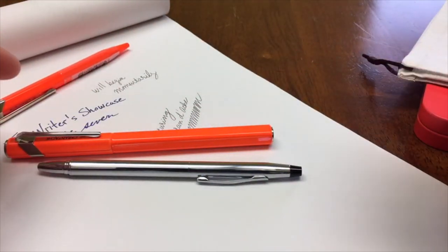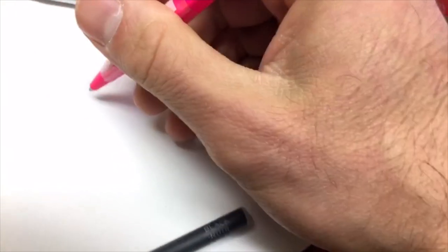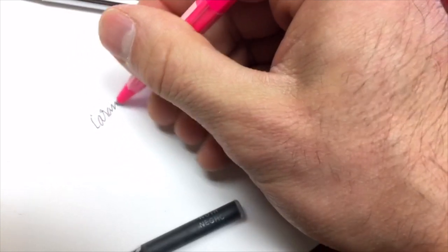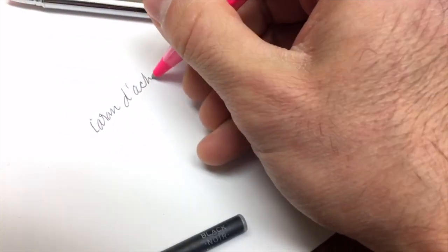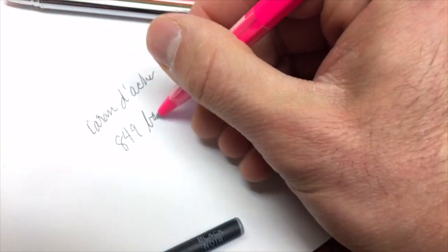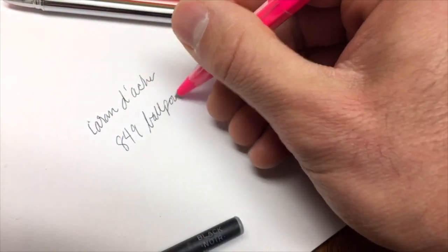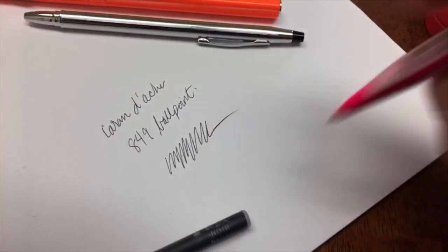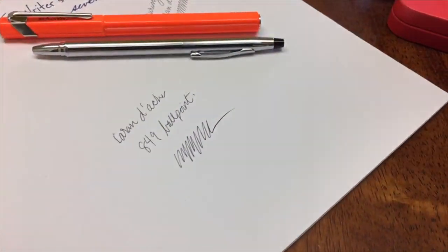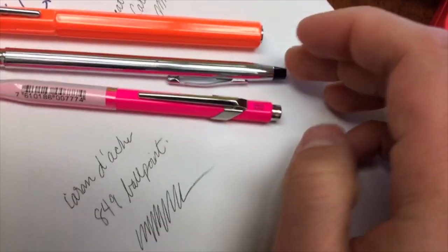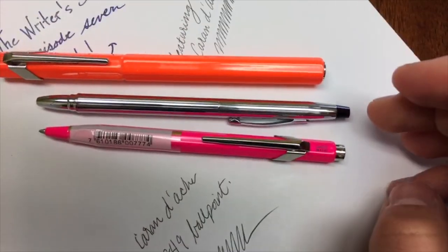Just screw in the top clicker part here back on. Nice smooth click action. I know we're talking about the fountain pen, but just wanted to give the ballpoint a shout out first.